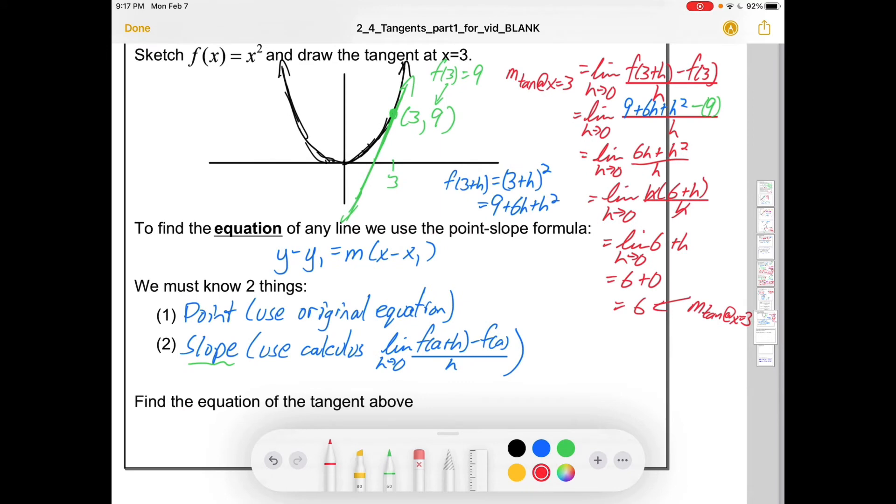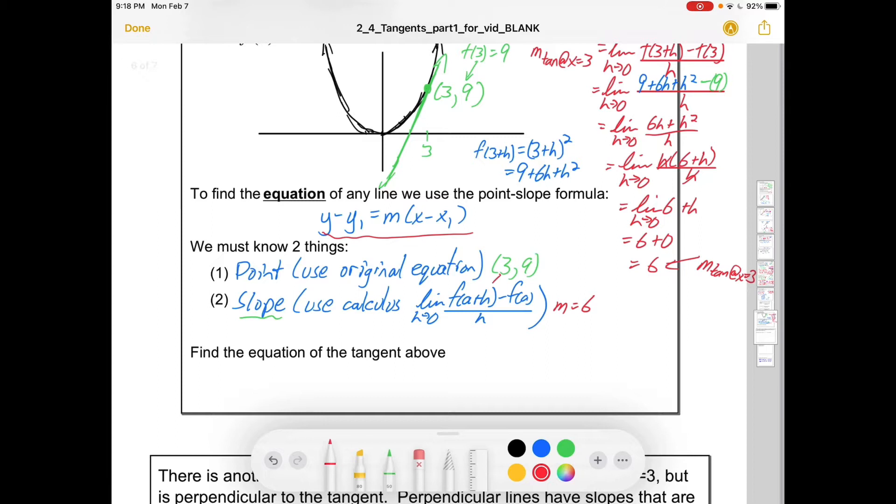So remember, to find the actual equation of this green line, we needed to know two things. We need to know the point, which is 3, 9, and the slope, which is 6. Great. Now we can plug and chug in the point-slope formula. So we'd have y minus 9 equals 6 times x minus 3, or 6x minus 18. Or if we added 9 to both sides and put it in y equals form, that would be 6x minus 9. Allegedly, that is the equation of this green line.